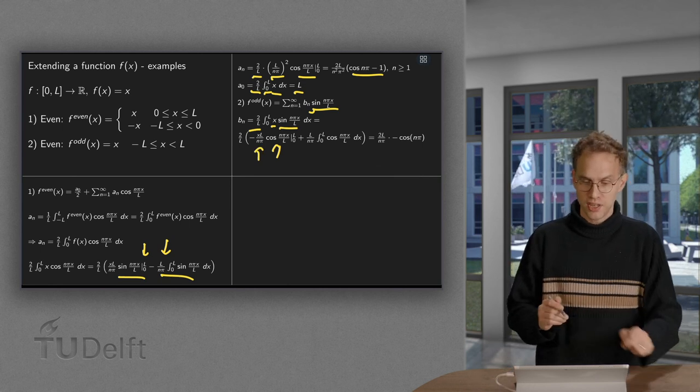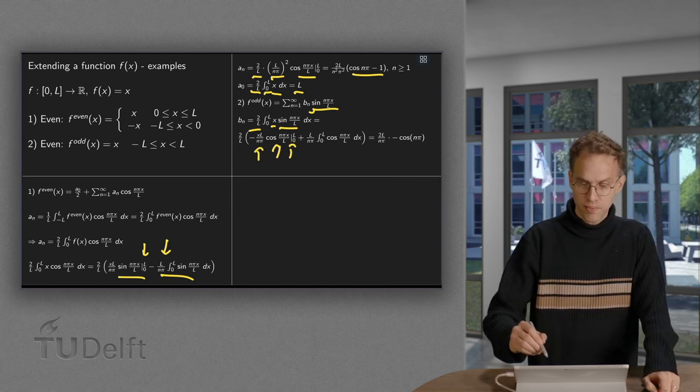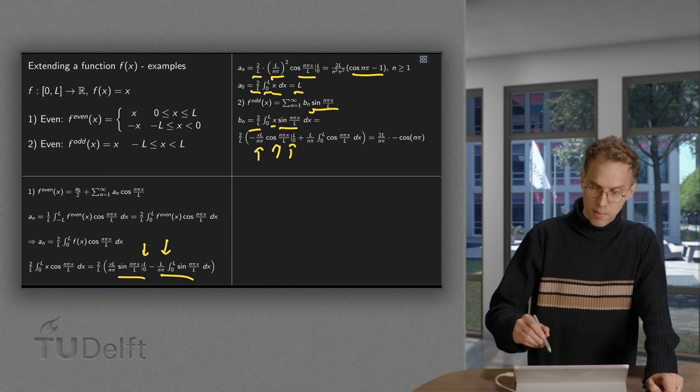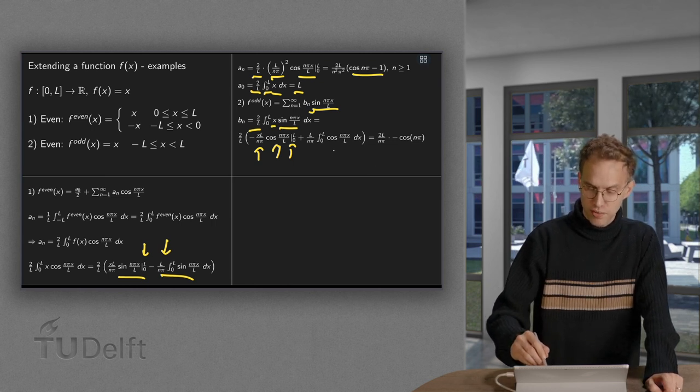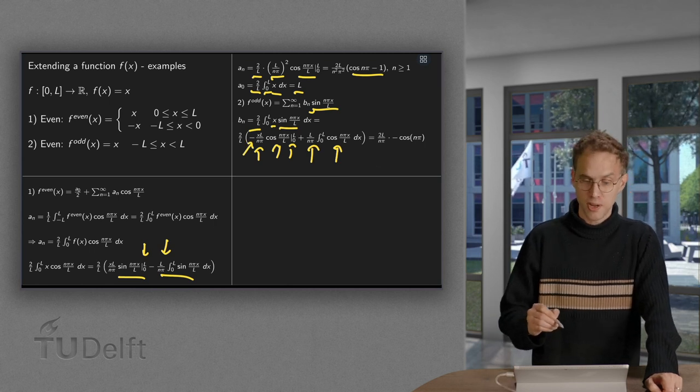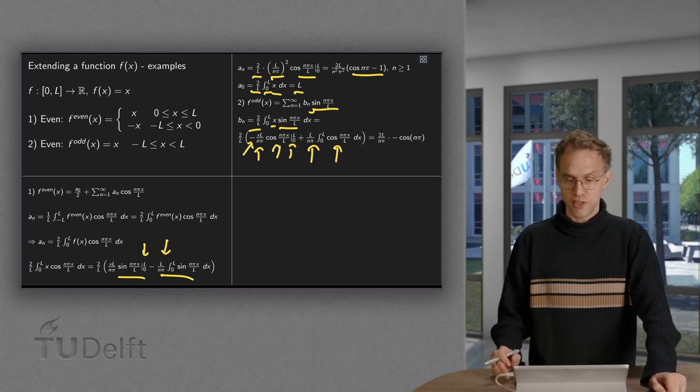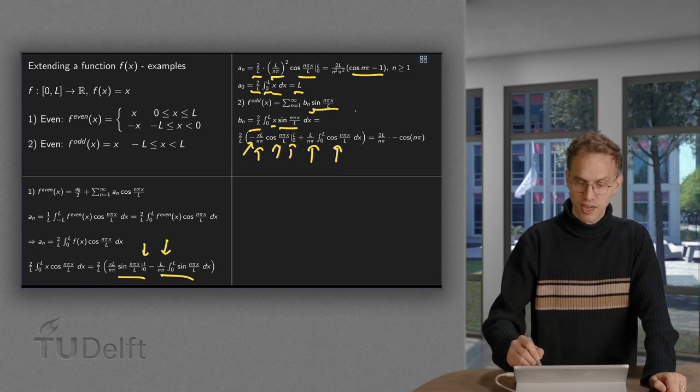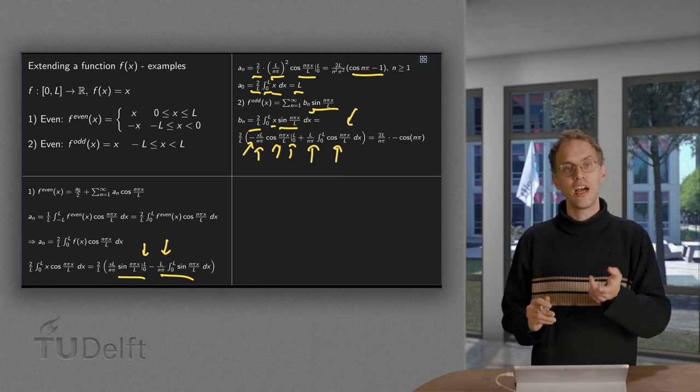Integrate the sine first gives us a cosine times l over n pi, times the x between the boundaries, minus the integral of this cosine times this l over n pi with this additional minus sign gives a plus times the derivative of x equals 1.